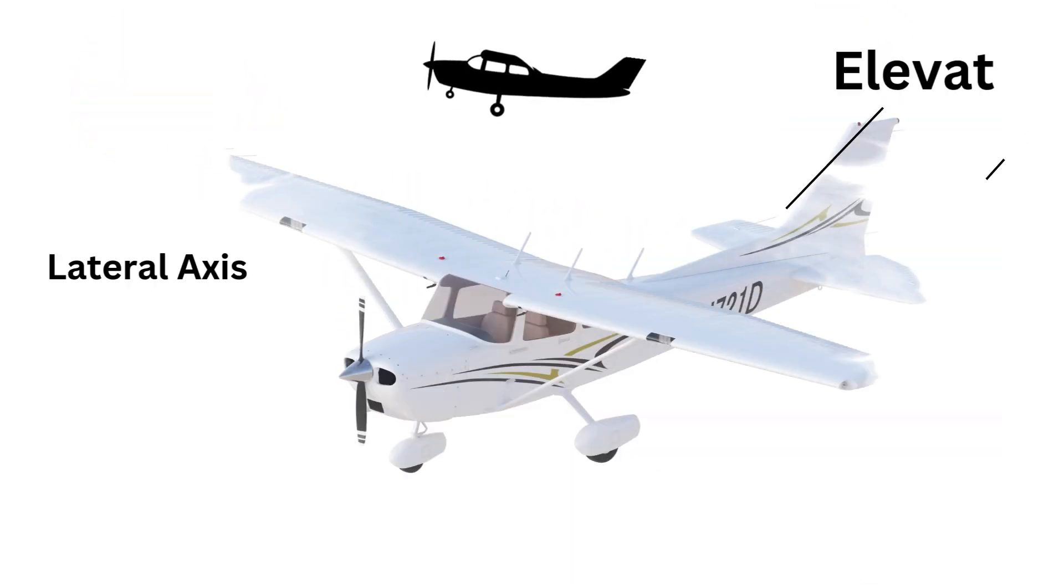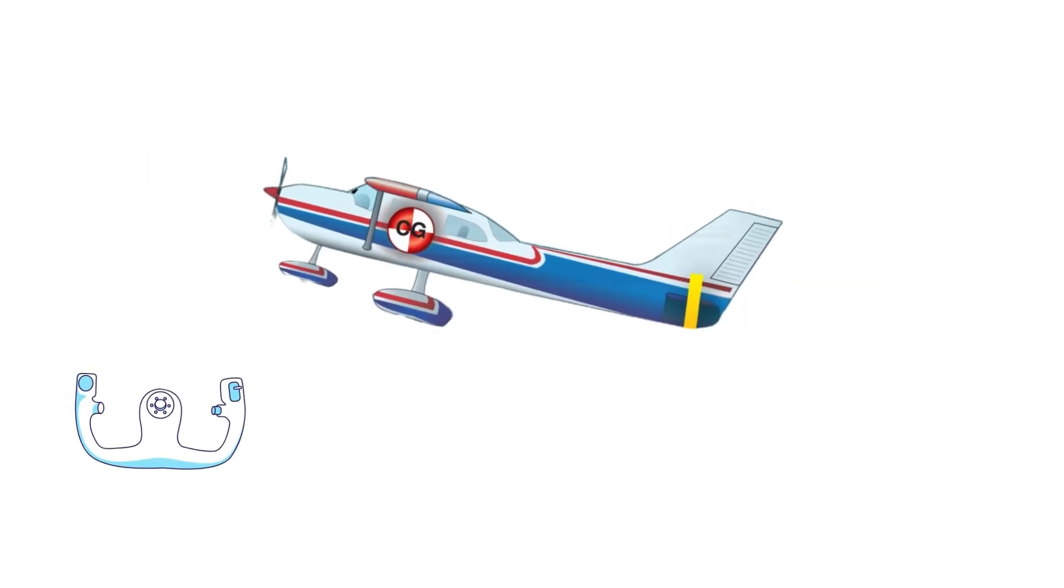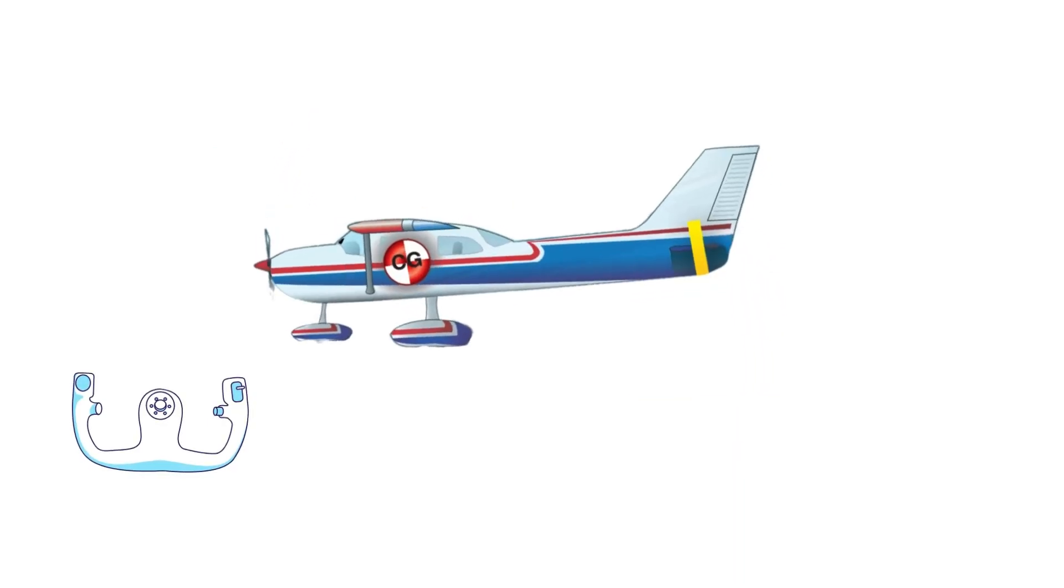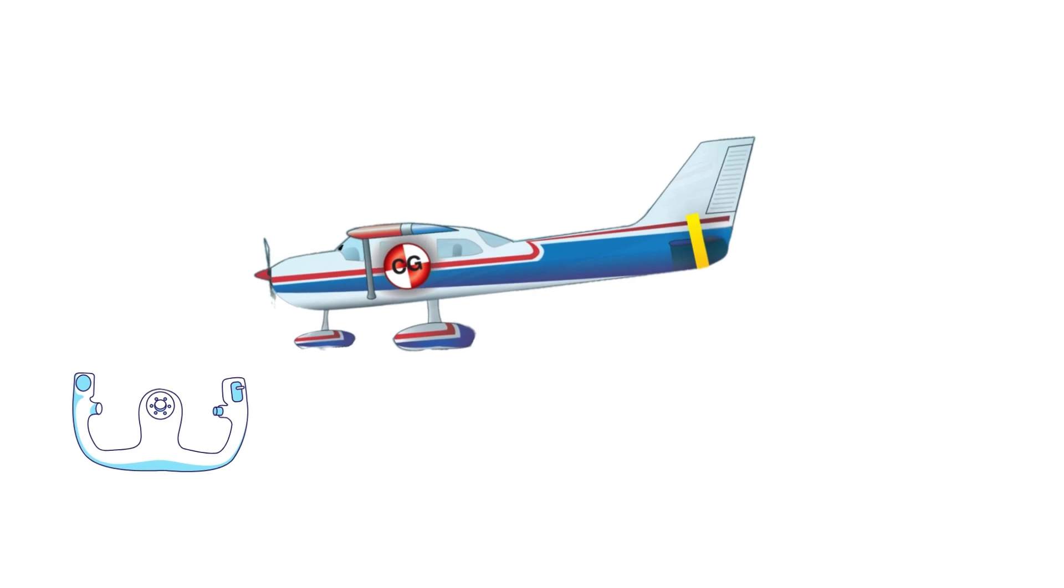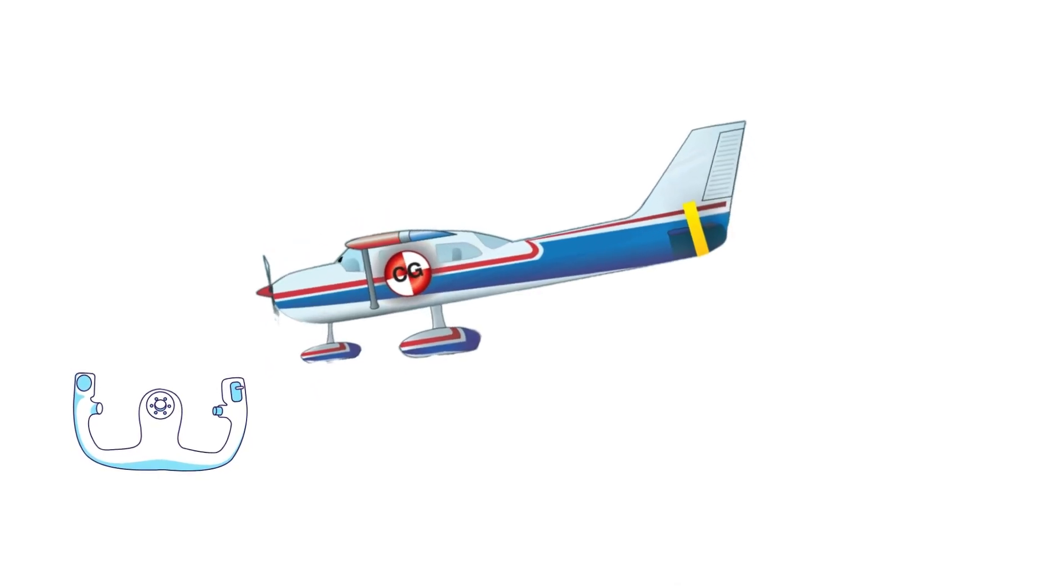The elevator is located at the rear of the airplane near the tail and horizontal stabilizer. Pulling the yoke back causes the elevator to deflect upward and the airplane to pitch up. Pushing the yoke forward causes the elevator to deflect down and the aircraft to pitch down.